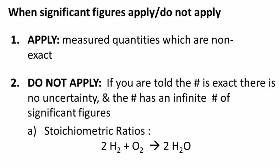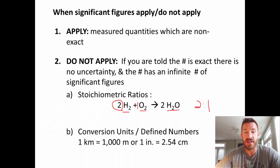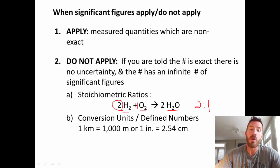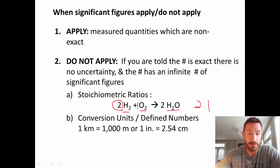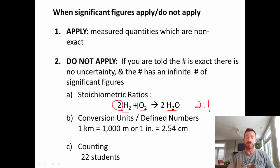We're going to look at chemical reactions in this class. In chemical reactions we have what we call a stoichiometric ratio. Hydrogen and oxygen combine to form water in a 2-to-1 ratio — this has an infinite number of significant figures. Also, conversion units or defined numbers: a thousand meters is exactly one kilometer, and one inch is equal to exactly 2.54 centimeters — both have infinite significant figures. Lastly, counting: if there are 22 students in the room, that's exactly 22 — not a measurement — so significant figures do not apply.